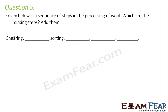The first step in the processing of wool is shearing, where the woolly covering is removed from the animal's body. After receiving the wool from the animal, the next thing that needs to be done is washing it properly so that all the dirt and grease can be removed. That process is called scouring.